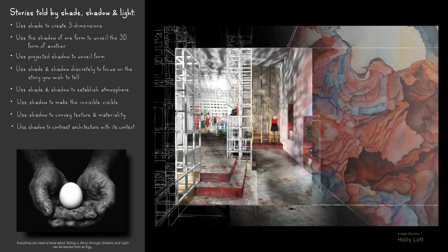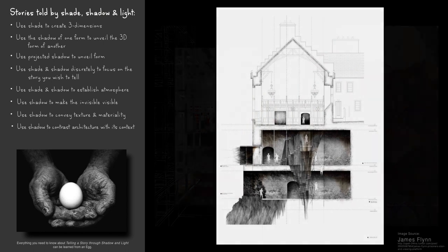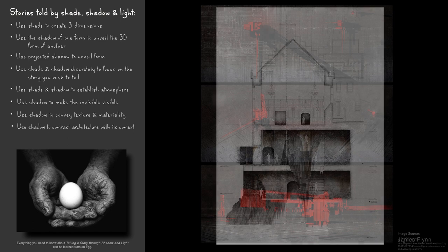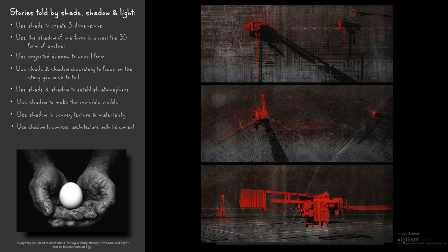Shadows can be used to tell a story by contrasting architecture with its context, setting up dialogues between shadow patterns and contextual patterns. In this drawing by James Flynn, only the most important spaces of the story are shaded. In these drawings by Vigilism, the shadows of the architectural forms are in stark contrast with the context, enhancing the dominance of the architecture.